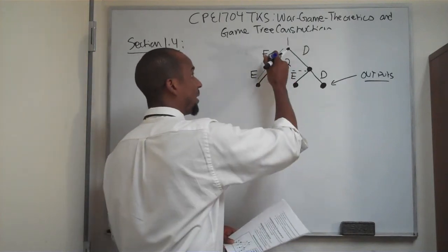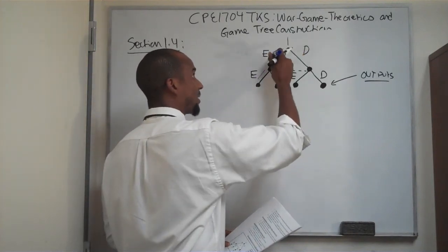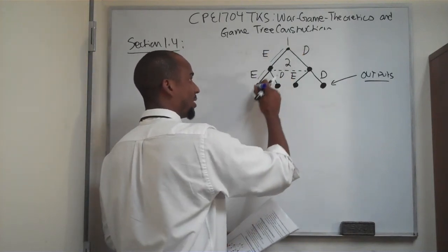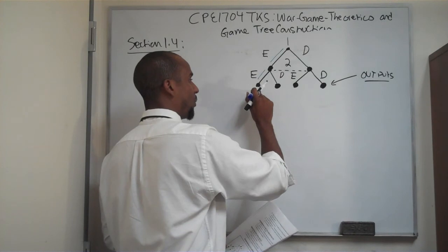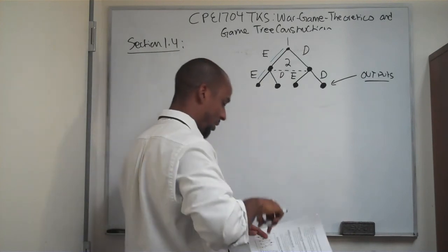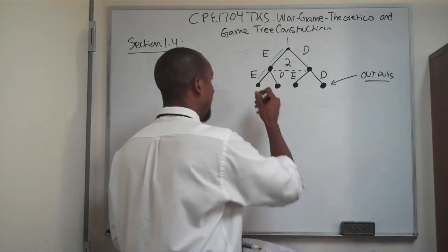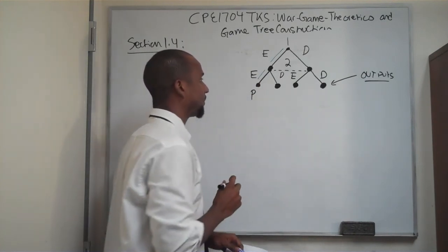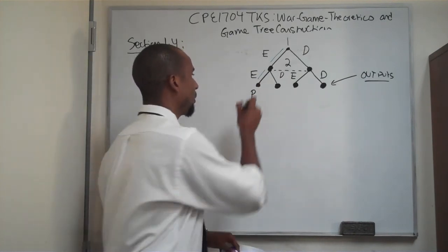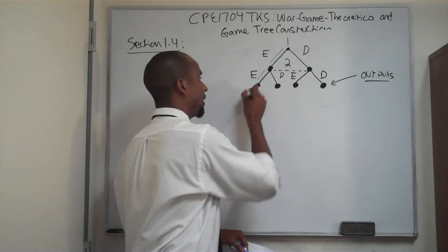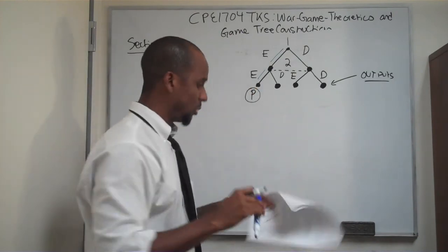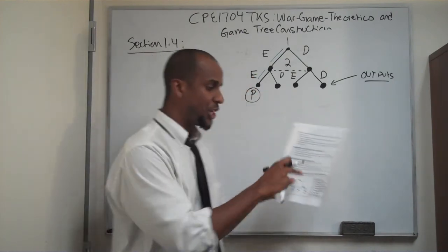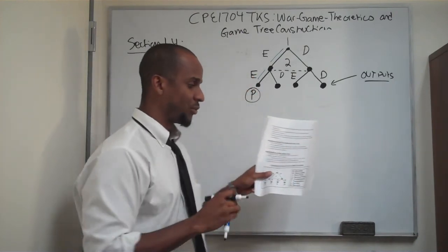If I escalate the war and my opponent escalates the war, we're going to label this dual escalation with P. Looking on our sheet, P stands for punishment.